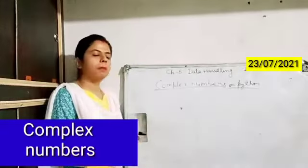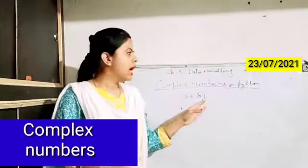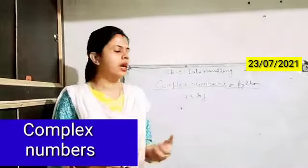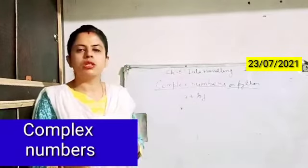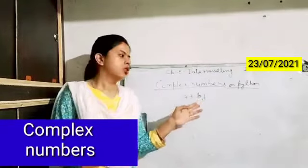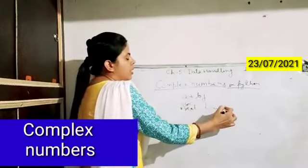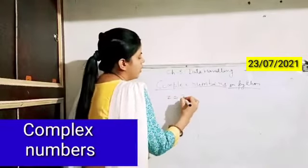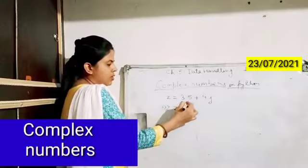Now, complex numbers in Python will be represented as a + bj. The letter i will not be used here as the imaginary part because i represents current in electrical engineering, so Python has replaced i with j as the imaginary part. So a and b represent the real part and j represents the imaginary part. For example, z = 3.5 + 4j. When you write z in interactive mode, it will give you the output 3.5+4j.